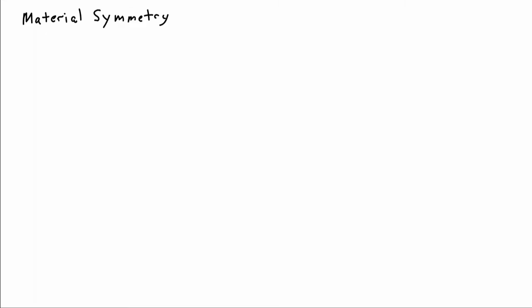I'd like to now consider material symmetry and its implications about the possibilities for the elastic moduli for linear elastic materials. Let me consider a material with a microstructure as drawn here — a little cube with four little motifs. I'll consider a coordinate system 1, 2, doing everything in two dimensions to keep things simple.